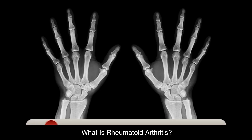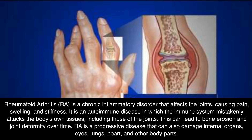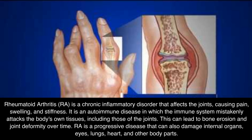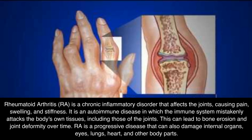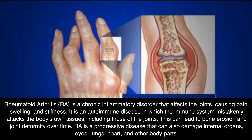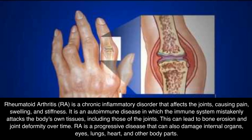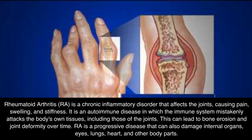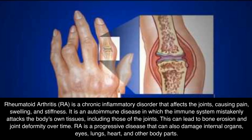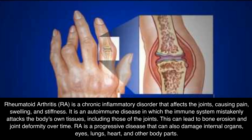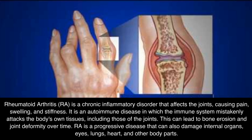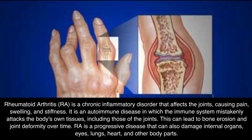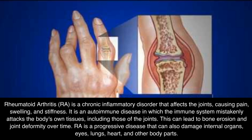What is Rheumatoid Arthritis? Rheumatoid Arthritis, or RA, is a chronic inflammatory disorder that affects the joints, causing pain, swelling, and stiffness. It is an autoimmune disease in which the immune system mistakenly attacks the body's own tissues, including those of the joints. This can lead to bone erosion and joint deformity over time. RA is a progressive disease that can also damage internal organs — eyes, lungs, heart, and other body parts.